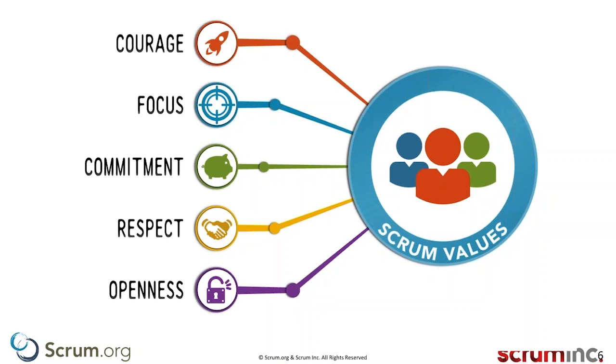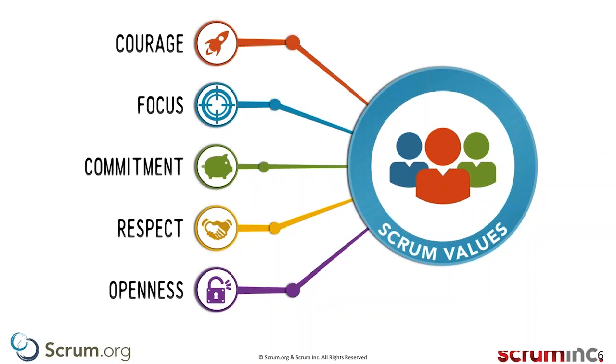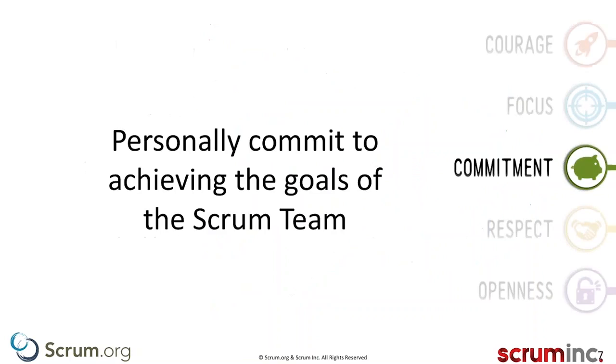We're going to talk about these values in order. We'll start with commitment — Ken really wanted to start with commitment. What does commitment mean? Commitment means that the people working in the Scrum team are committed to themselves, to each other, to what the organization is trying to do, and very tactically, to what they commit to in the sprint planning meeting.